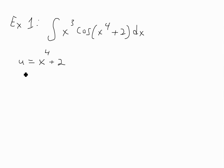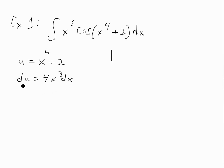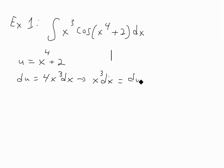We plug that in and find the differential du. Using the derivative of x to the 4 — bring the 4 down to get 4x cubed — and the derivative of 2 is 0, so du equals 4x cubed dx. We can then rearrange to get x cubed dx equals du divided by 4.